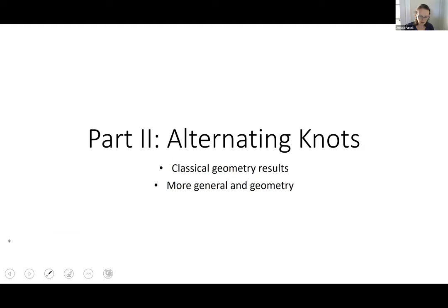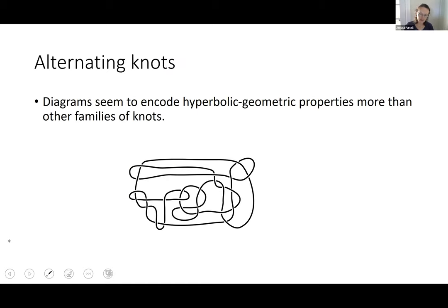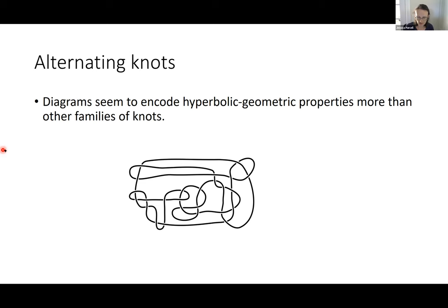This brings us into part two, which is all about alternating knots. I just said that finding geometry from a diagram is hard. There is one particular family that has more results along these lines than any other, and that is the class of alternating knots. Alternating knots, such as this 25-crossing diagram, are knots where the diagram runs in a sequence: over, under, over, under, and so on all the way around. For some reason, diagrams of alternating knots work better with hyperbolic geometry than other families.